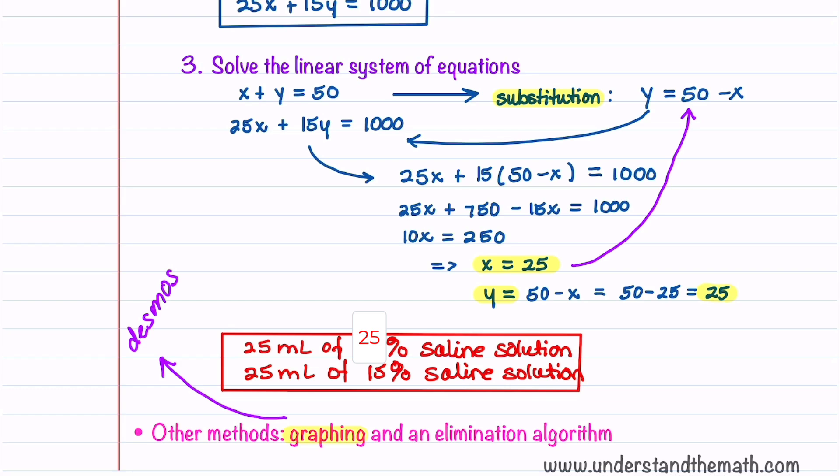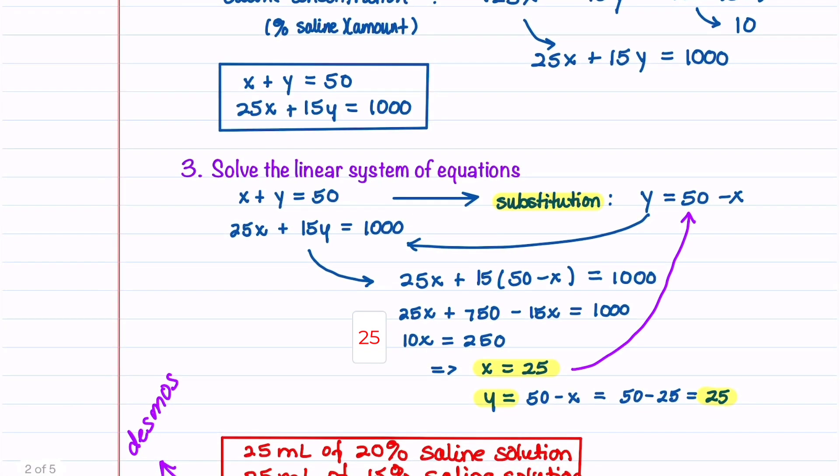You would plug in these two equations and then graph them. The point of intersection of these two graphs would be the solution to the problem, which is 25 and 25.